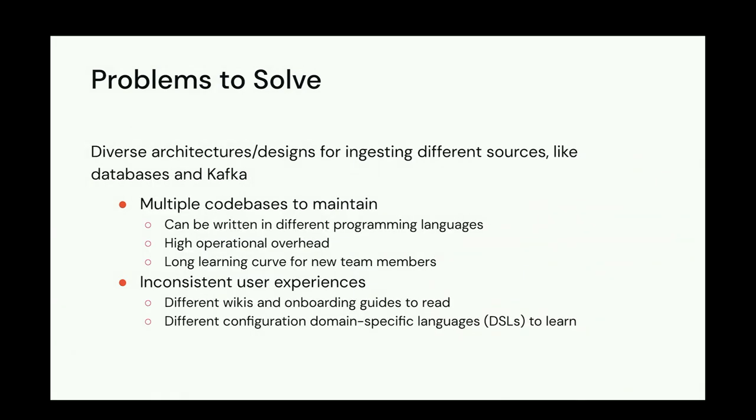The second problem is that as the company grows to hundreds or thousands of engineers, we start introducing different kinds of databases. This means the data ingestion team needs to come up with different designs to replicate or ingest data from these different sources, including Kafka. The team can easily end up with multiple codebases to maintain, implemented by different people, even in different programming languages. Over time, this becomes a high operational overhead, and for new team members it causes a long learning curve.